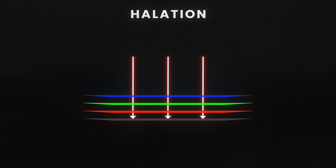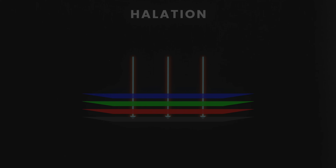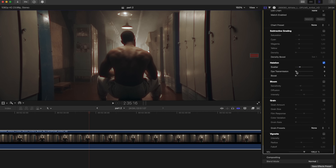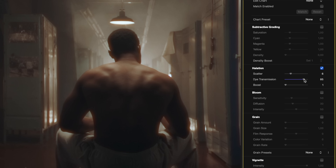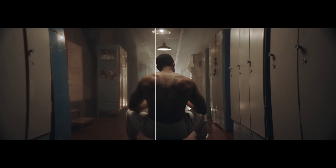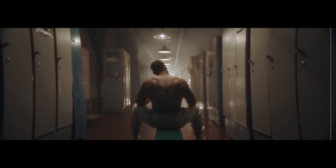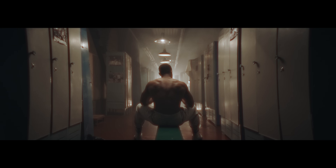This effect starts with a red glow because the red light scatters the most. However, as the light penetrates deeper into the film, it can also reach the green dye layer, which shifts the halation glow from red to yellow, depending on the intensity of the light. The dye transmission control allows you to simulate this process. By increasing dye transmission, you're essentially letting more light reach the green dye layer, causing the halation to transition from a red hue into a warmer yellow glow. This creates a more complex and natural halation effect, mimicking how real film stock behaves under intense lighting conditions. In simpler terms, the dye transmission control paints the halation with additional colors, moving it from the initial red into warmer tones, just like how light spreads across different dye layers in traditional film.